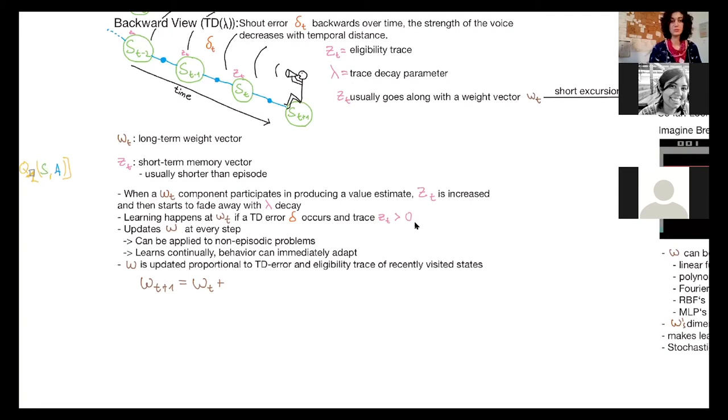And the idea is that when a component of this weight vector participates in producing a value estimate, then the eligibility trace at this weight vector is increased and then starts to fade away with lambda. So w and z have the same size.